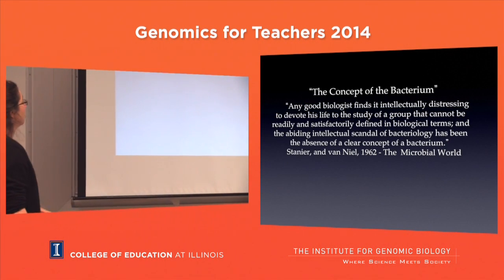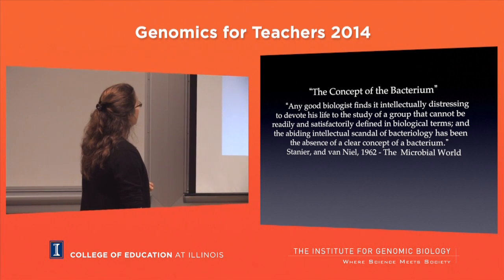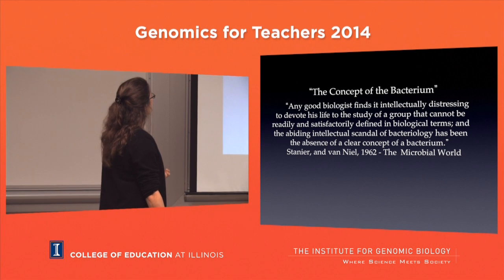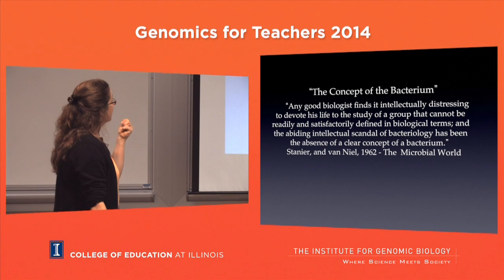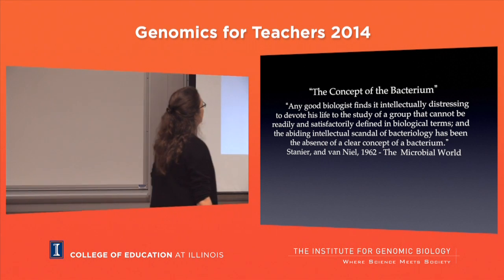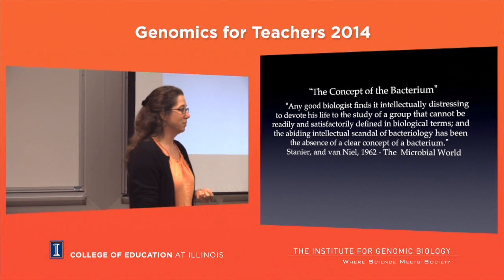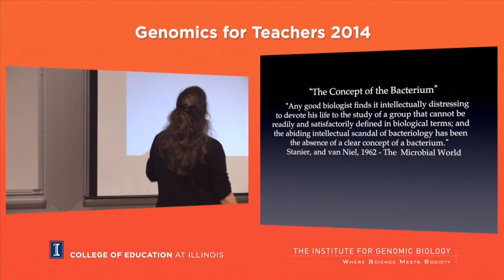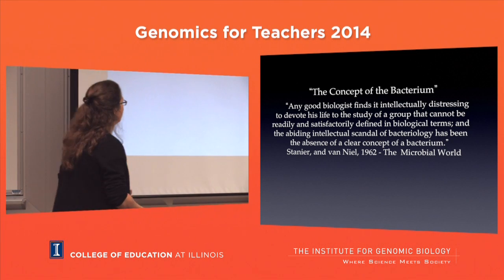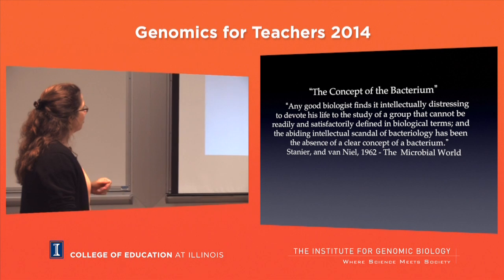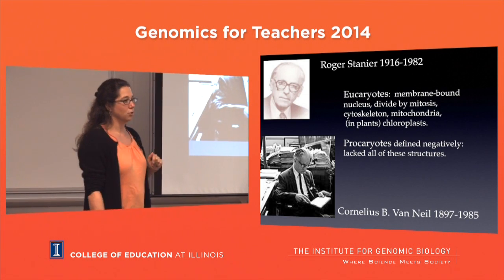Some people still cared. As written in 'The Microbial World': 'Any good biologist finds it intellectually distressing to devote his life to the study of a group that cannot readily or satisfactorily be defined in biological terms.' It's a scandal - we don't really know what this concept of a bacterium is. Stanier and Van Neel tried to put forth an evolutionary explanation in 1962, defining the eukaryotes and the prokaryotes.